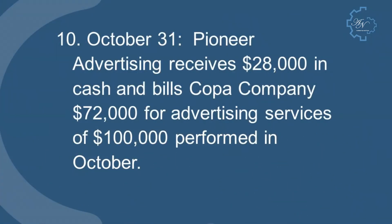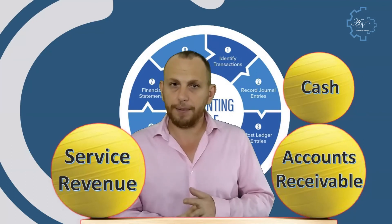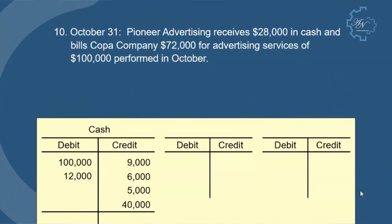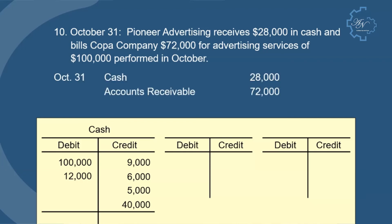October 31: Pioneer Advertising receives $28,000 in cash and bills Copa Company $72,000 for advertising services of $100,000 performed in October. We have service revenue, cash, and accounts receivable. The entry is: debit cash and accounts receivable, credit service revenue. The posting will be to three accounts.